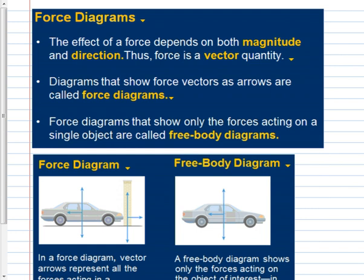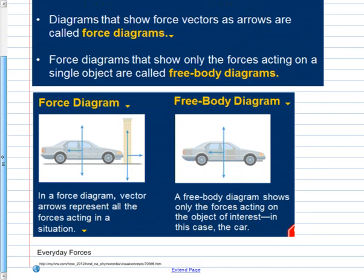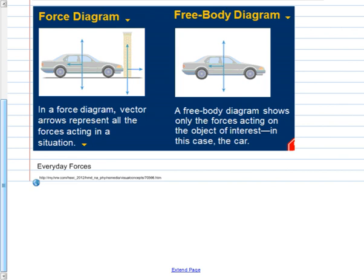Now, force diagrams. Since force is a vector quantity, we need to show both magnitude and direction. We use vectors — arrows — to draw force diagrams, which show all the forces acting in a situation. We will act like everything is centered at a dot representing the object, rather than trying to draw forces where they're physically contacting.